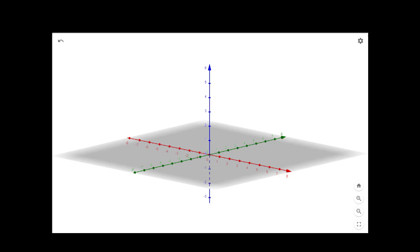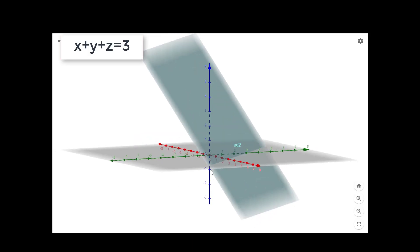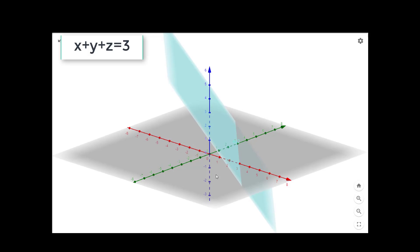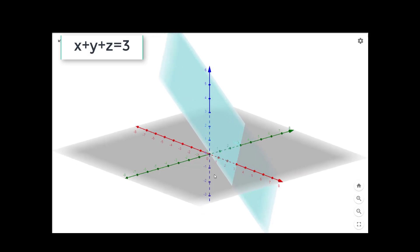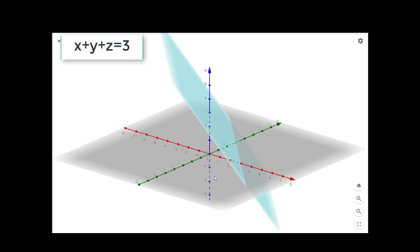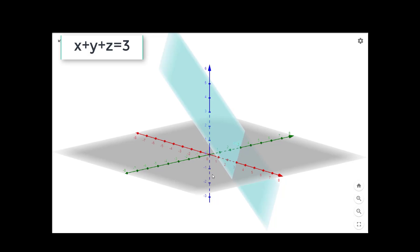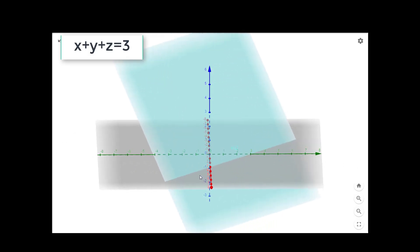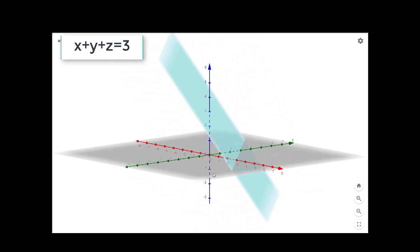Now let us see the second equation: x plus y plus z equal to 3. This is how the plane looks. The plane will pass through (3, 0, 0), as that point satisfies this equation. Similarly, (0, 3, 0) will satisfy it, so it will intersect the y-axis at (0, 3, 0). And it will intersect the z-axis at (0, 0, 3). So all the x, y, and z intercepts are at a distance of 3 from the origin in the positive direction. This is the plane x plus y plus z equal to 3.